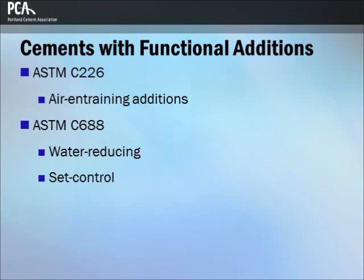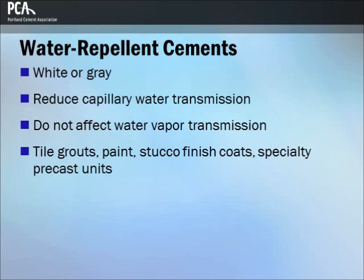Functional additions can be integrated with cement clinker to beneficially change the properties of hydraulic cement. ASTM C-226 addresses air entraining additions, while ASTM C-688 addresses water reducing additions and set controlling additions, including accelerators and retarders. Water repellent cements, sometimes called waterproof cements, are usually made by adding a small amount of stearate to cement clinker during final grinding. Water repellent cements are used in tile grouts, paint, stucco finish coats, and specialty precast units.